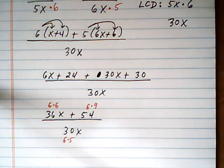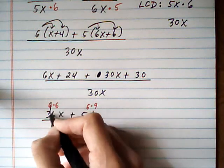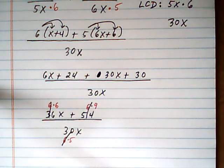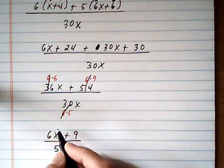That means it's okay for us to cancel 6 from everywhere. So 6 is gone, 6 is gone, and 6 is gone. So now we're left with 6x plus 9 over 5x. And that would be our final answer.